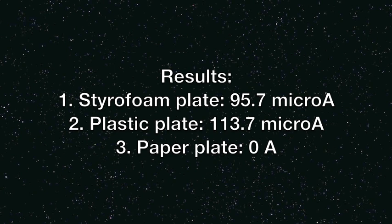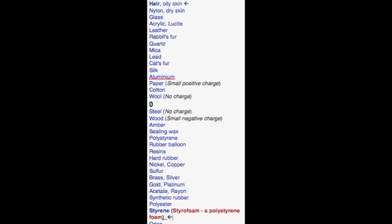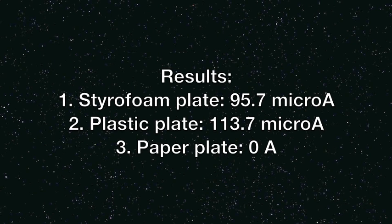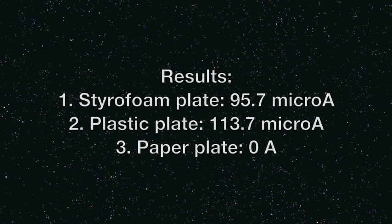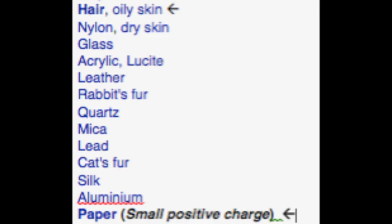We can see that the styrofoam plate produced 95.7 microamperes. This shows that the current produced is very small — it's almost the same amount of current produced when you feel an electric shock. The plastic plate, on the other hand, produced 113.7 microamperes, which is a higher reading than the styrofoam plate. This is because, based on the triboelectric series, the material towards the bottom of the series, when touched to a material near the top, will attain a more negative charge, thus producing a higher current. Meanwhile, the paper plate didn't produce any current, because both materials are in the positive category and are near to each other on the series.